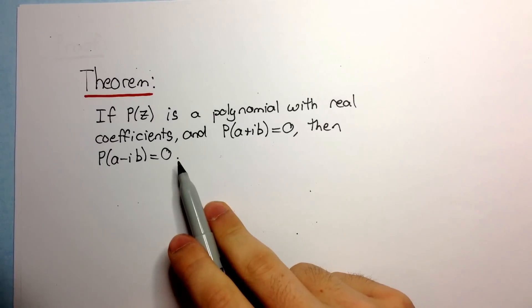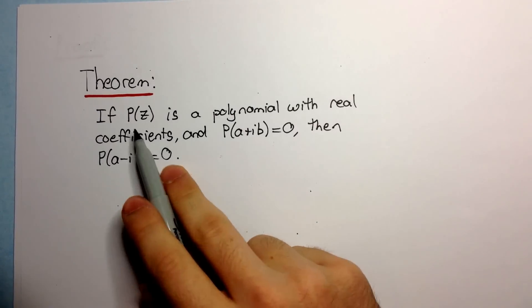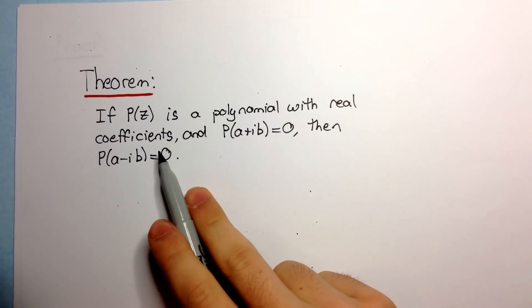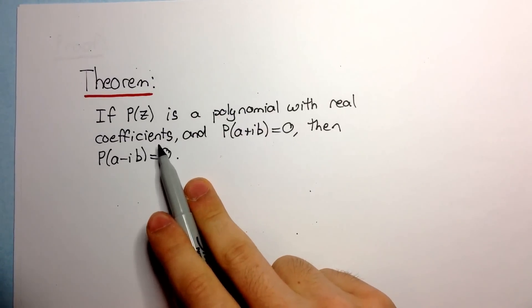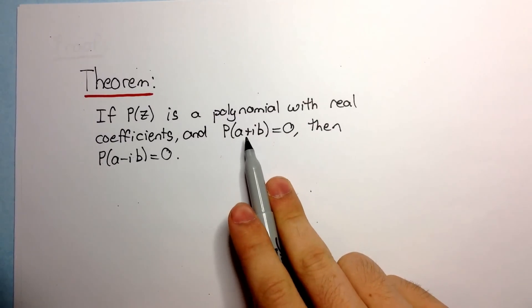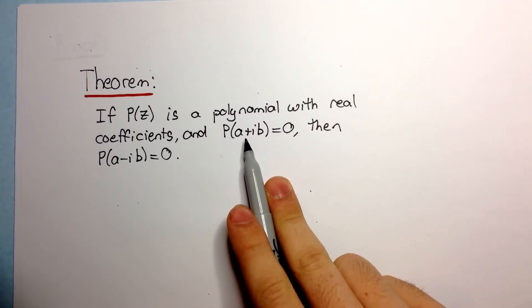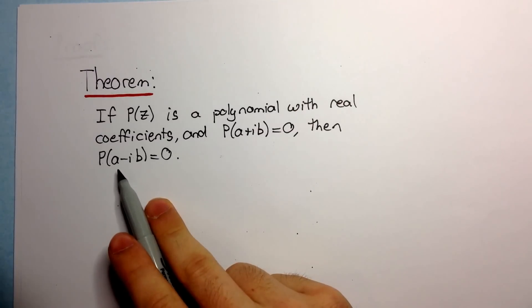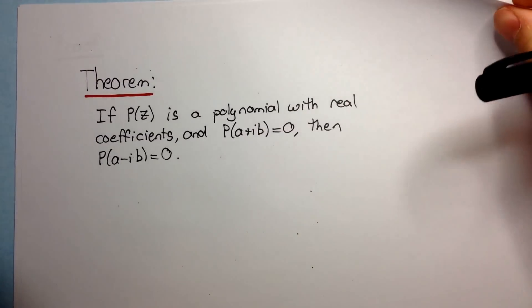So what does this really mean? It means that if you have a polynomial with real coefficients — and it's important that there are real coefficients, otherwise this theorem doesn't apply — and you have a complex solution to this polynomial, then its complex conjugate is also a solution. I'll just be proving this to you in this video.